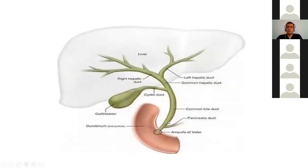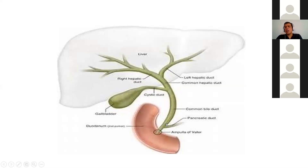This diagram shows normal biliary anatomy. Bile is produced inside the liver and flows down through the right and left hepatic ducts to the common hepatic duct. From there, it sometimes gets concentrated via the cystic duct in the gallbladder, then flows through the common bile duct. The pancreatic duct sometimes joins the common bile duct or opens directly into the duodenum. Anything obstructing this flow can cause an obstructive problem.